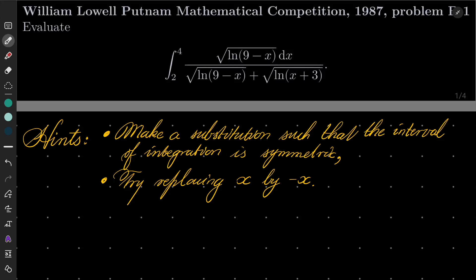Hello friends, in this video I'd like to present my solution to the following problem from the William Lowell Putnam Mathematical Competition 1987, problem B1. So we wish to evaluate the following integral: the definite integral from 2 to 4 of the square root of natural log of 9 minus x over the square root of natural log of 9 minus x plus the square root of natural log of x plus 3, dx.